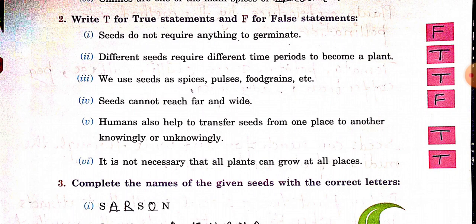Second: different seeds require different time periods to become a plant — True. Third: we use seeds as spices, pulses, food grains, etc. — True. Fourth: seeds cannot reach far and wide — False. Fifth: humans also help to transfer seeds from one place to another, knowingly or unknowingly — True.